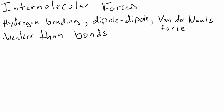But they are still really, really important, especially in terms of determining whether at a given temperature a substance is a solid, liquid, or gas. What we're going to do is define each one, give a little example, and then examine the relative strength of these forces relative to each other. Then we'll relate that to what it means about whether something is probably going to be a solid, liquid, or gas at a given temperature. So let's get started.